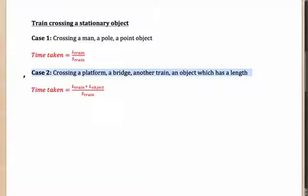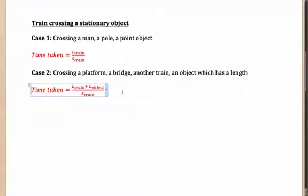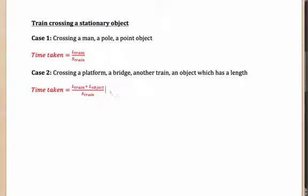However, if the train is crossing a platform, a bridge, another train, or any object which has a certain length, its speed remains the same but what changes is the distance it needs to cover. It not only needs to cover its own length but also the length of the object it is crossing. So in this case, the time taken is the sum of both lengths divided by the speed of the train.